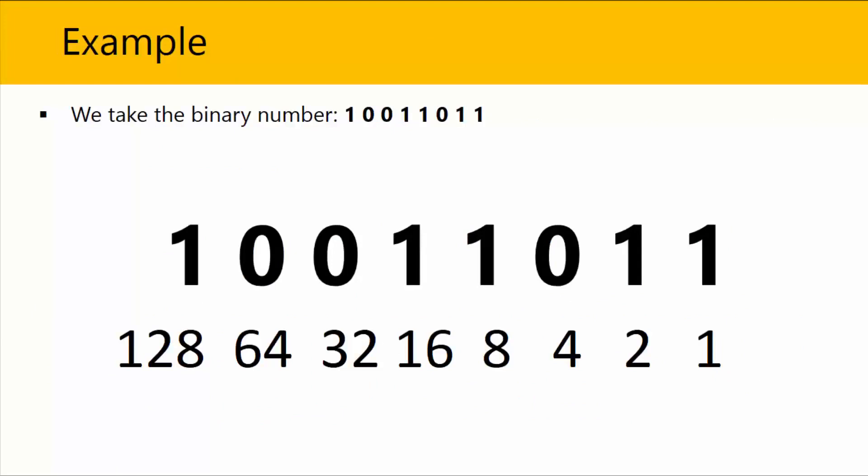So I have written it in bold over here, and under that we have written the number row values as you can see from right to left. So 1, 2, 4, 8, 16, 32, 64, 128 is exactly under the binary number.